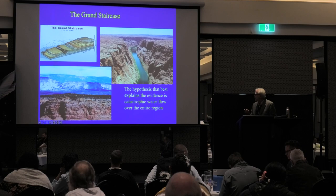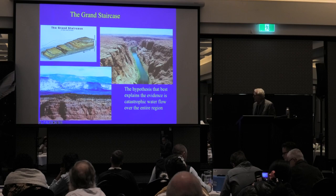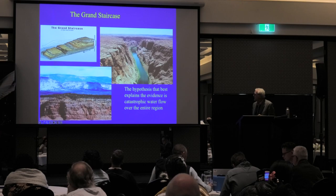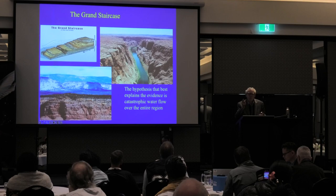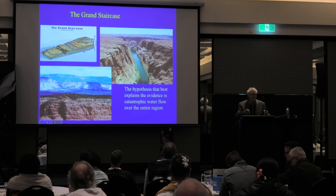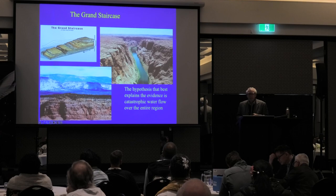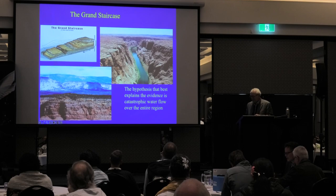The hypothesis that best explains the evidence is catastrophic water flow over the entire region, coming from the north probably, and eroding down — I mean massive catastrophic water flow. Rivers just won't do it. I've searched the literature to find how geologists explain this, and they don't. I found one paper, and it doesn't explain how it happened. He accepts the radiometric scale as correct and from that estimates it took one to nine million years for each of these platforms to form — but that's all. He doesn't even try to explain how it happened. Catastrophic water flow is the only thing that will work.